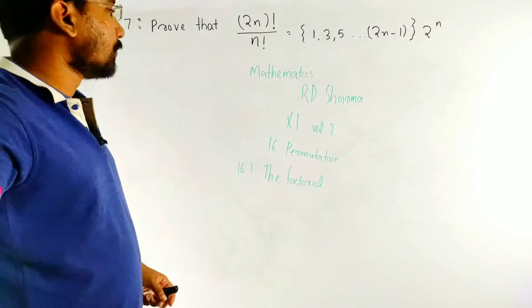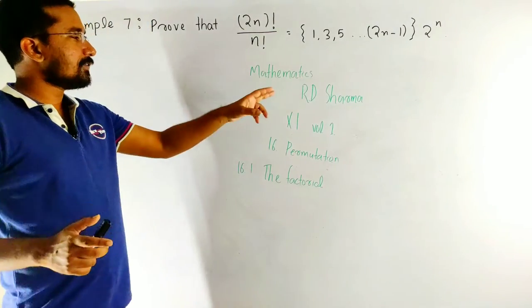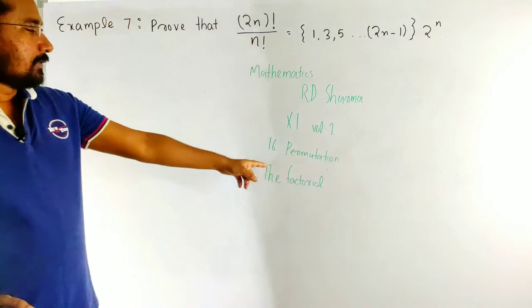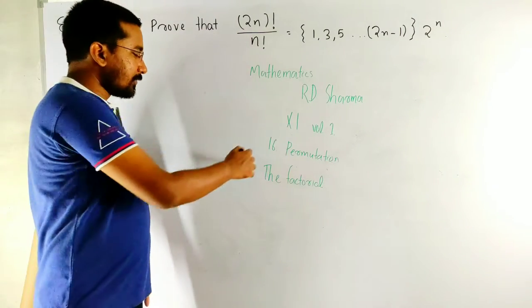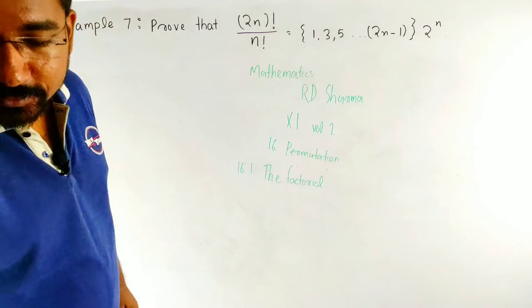Today we are going to solve the problem from mathematics book by R.D. Sharma, class 11, volume 1, chapter permutation, section 16.1, the factorial.